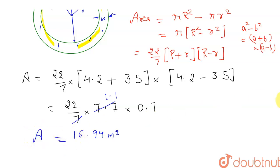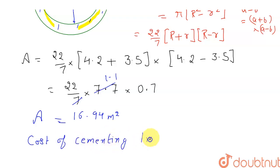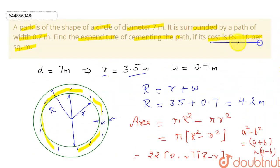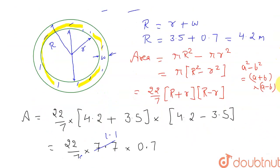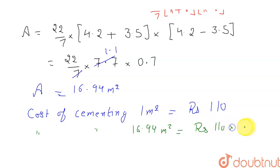Now we need to find the expenditure of cementing this path. The cost of cementing 1 square meter is rupees 110, as given in the question. Our total area is 16.94 square meters, so the cost of cementing 16.94 square meters equals 110 multiplied by 16.94.